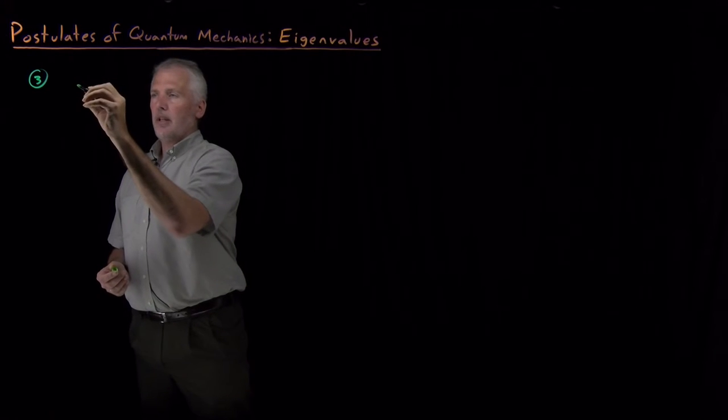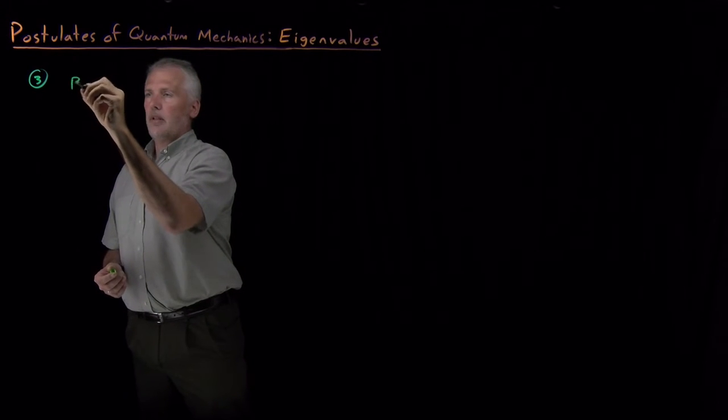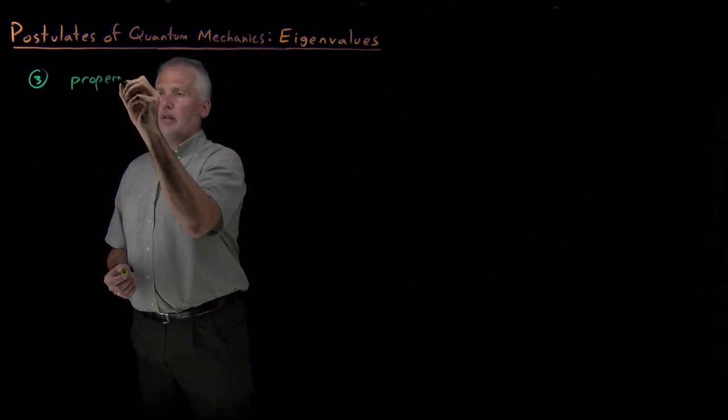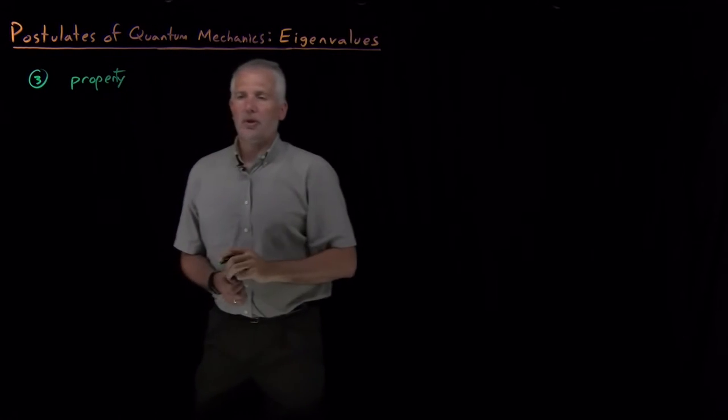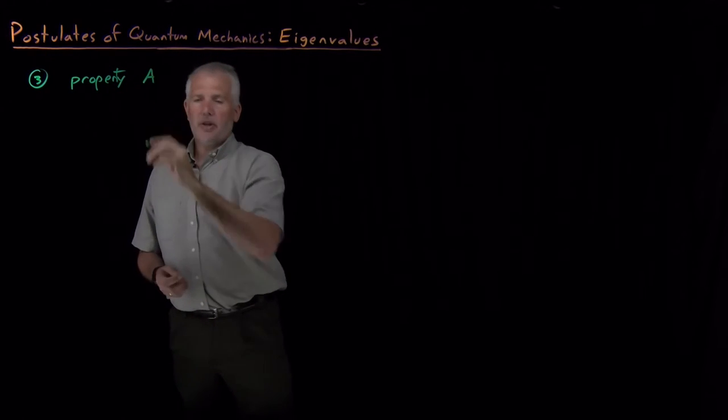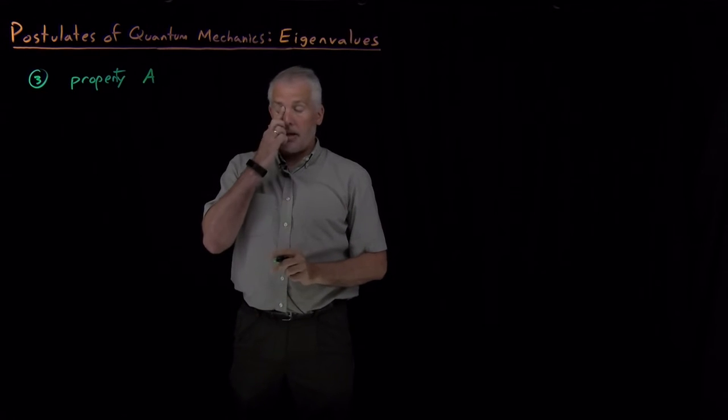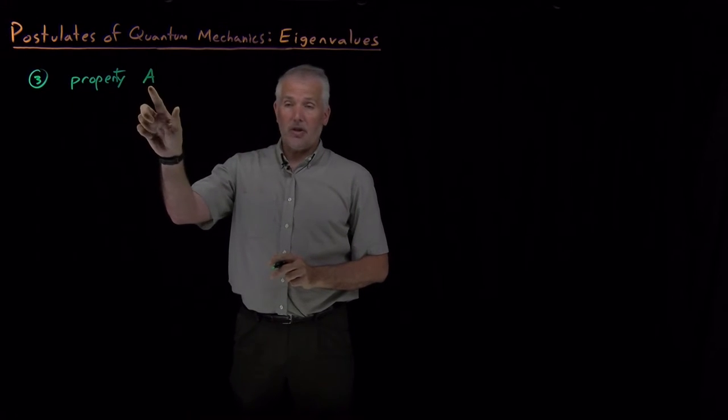So the postulate says a property or a physical observable, maybe the energy, maybe the momentum, maybe whatever property I'm interested in. If there's some property, let's just call it A.